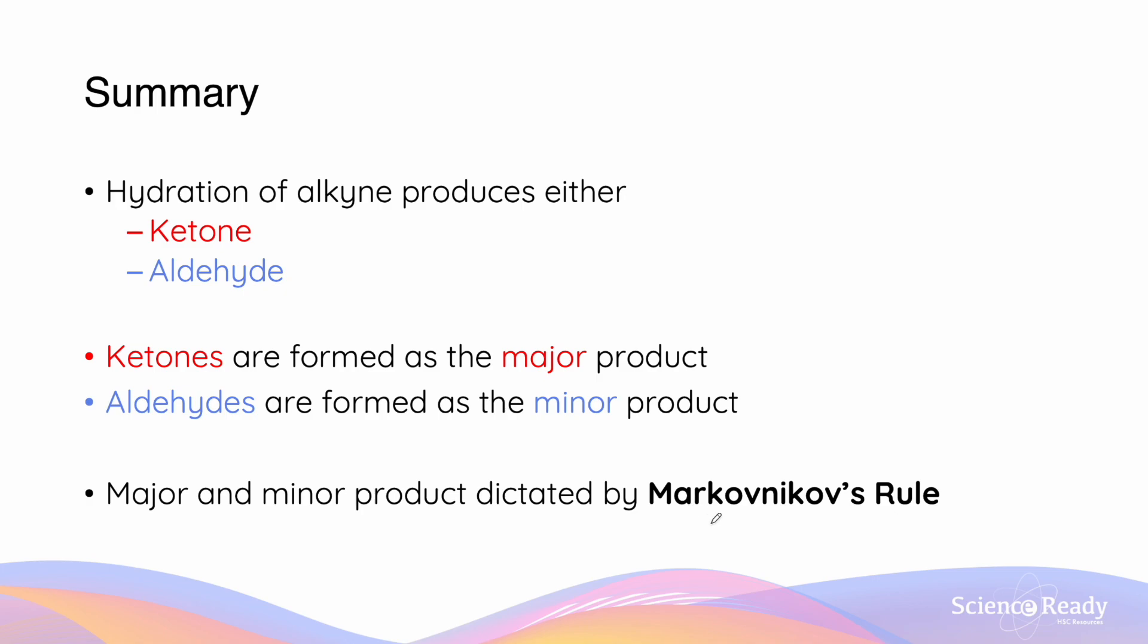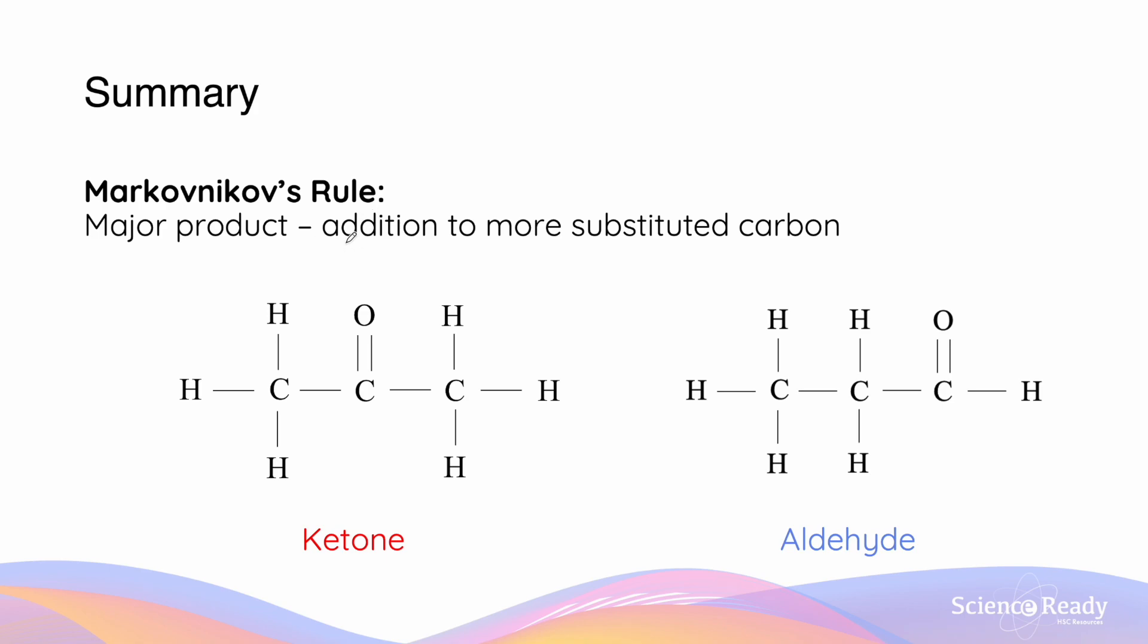So let's look at how we can apply Markovnikov's rule to determine which one is the major and the minor product. Markovnikov's rule says that the major product is going to be the product of the addition reaction to the more substituted carbon.